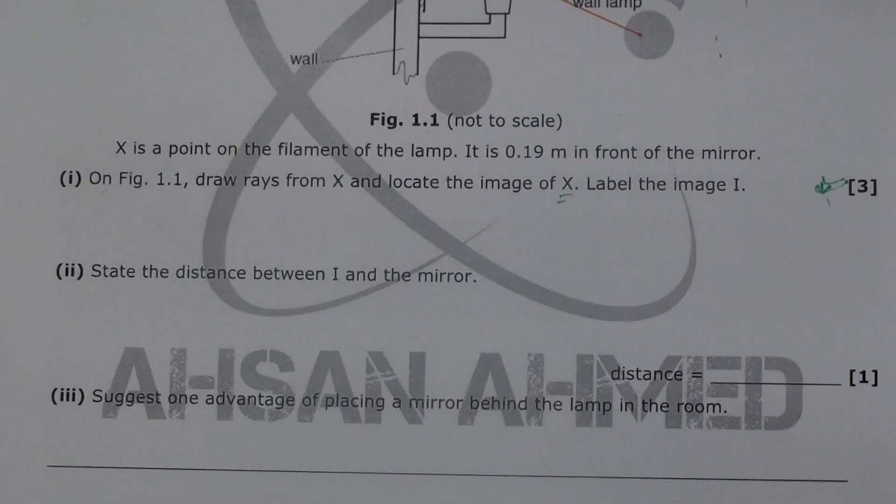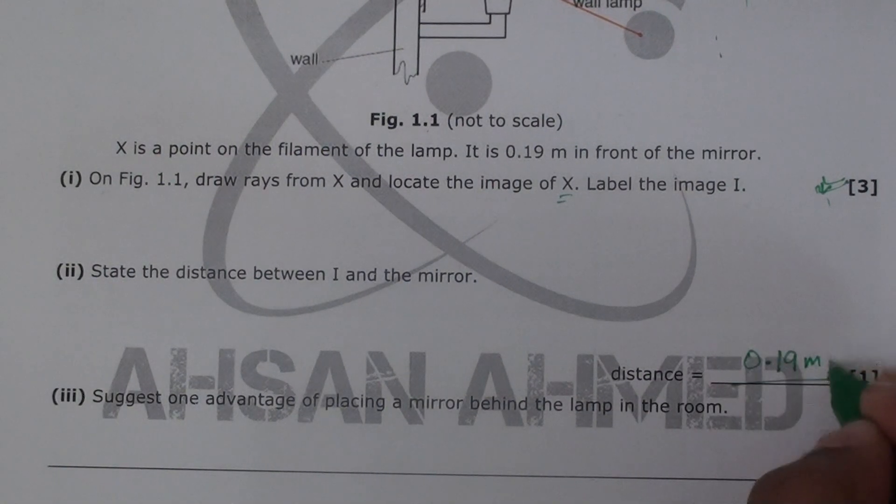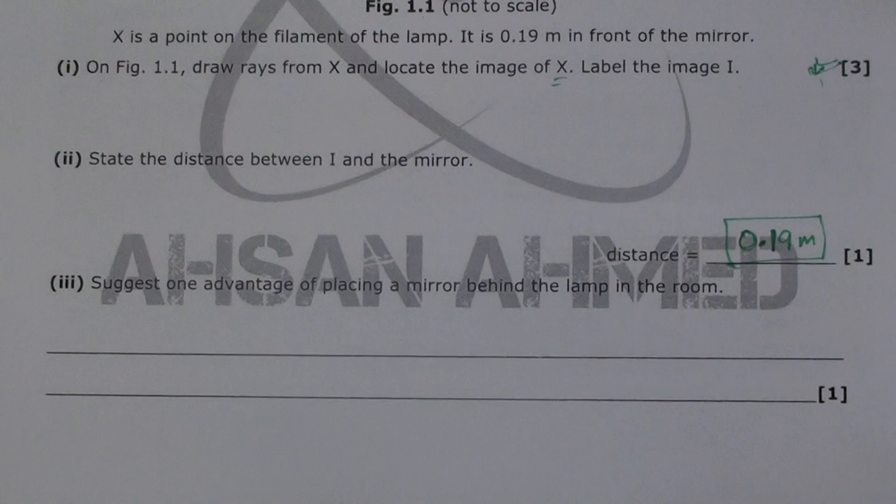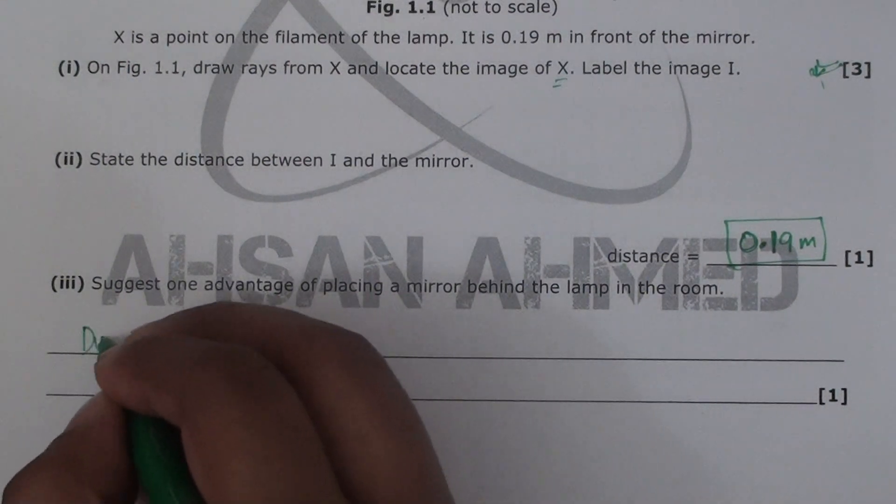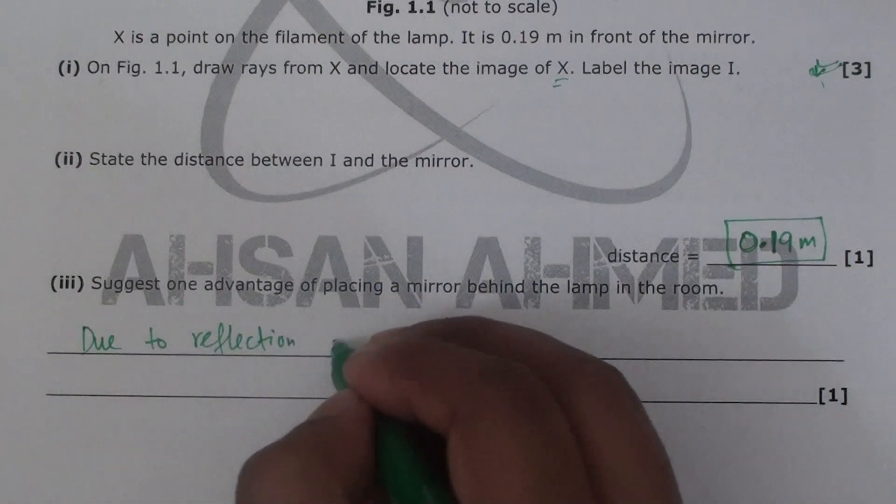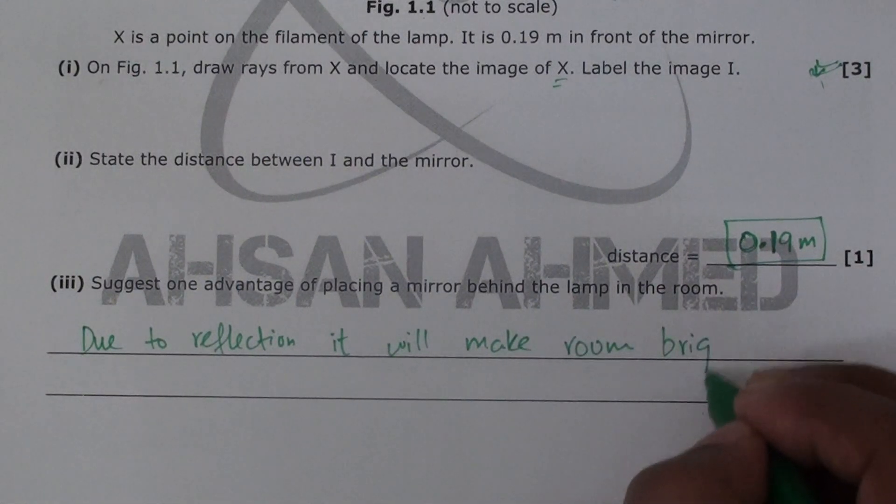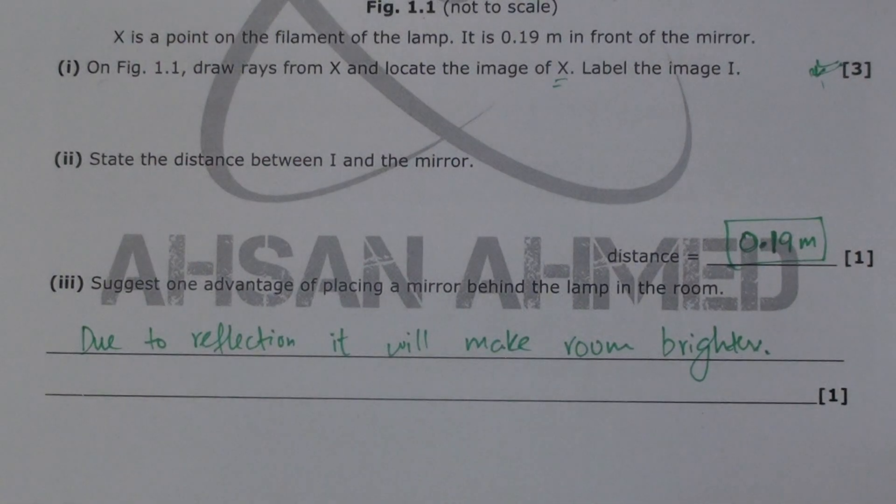Now let's look at the next part - state the distance between I and the mirror. That should be same, so that should be 0.19 meter, same distance as the object. The last part is suggest one advantage of placing a mirror behind the lamp in the room. That is due to reflection it will make the room brighter. The luminosity will be more - the room will be bright from the mirror. So that will be a benefit.